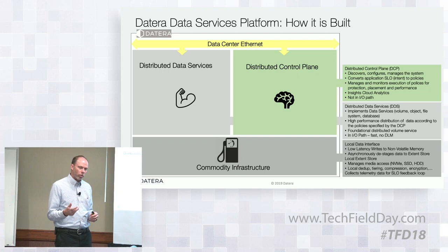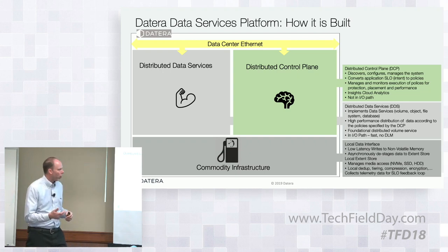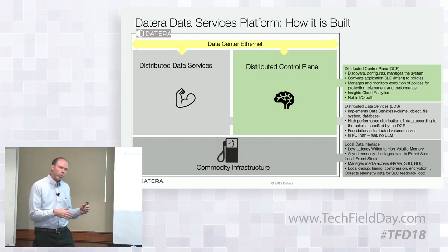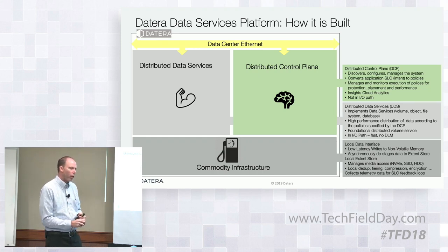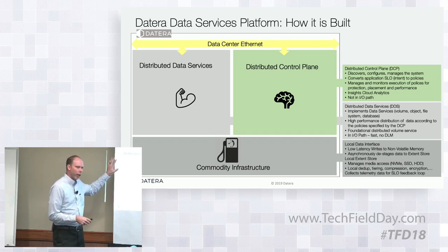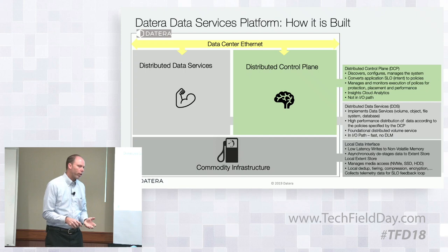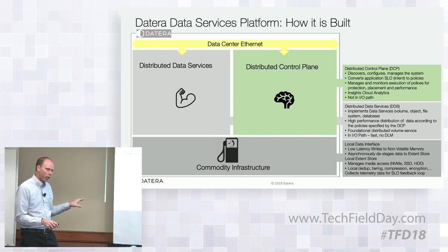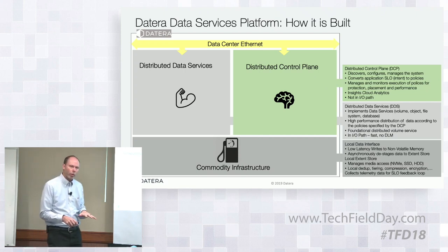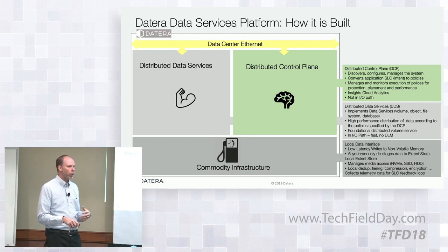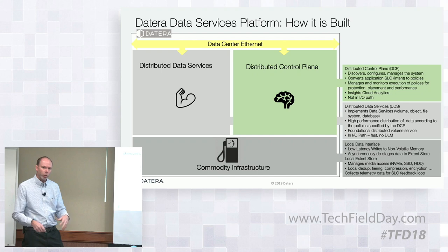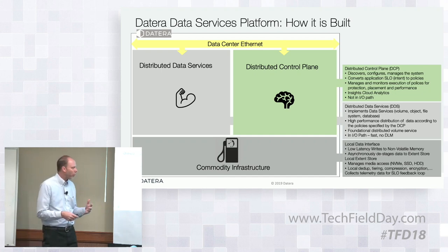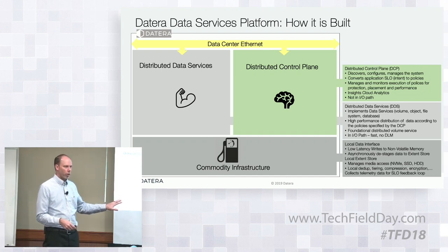One of the other innovative things this layer does is that dedupe, compression, and snapshots happen here, at the infrastructure layer. Most of the time those happen up in the data path layer. We've pushed them down so we can develop algorithms optimized for the type of media. I might run a different deduplication algorithm on persistent memory than I would on hard drives. We support that full range of media, so we can optimize algorithms based on the available infrastructure.